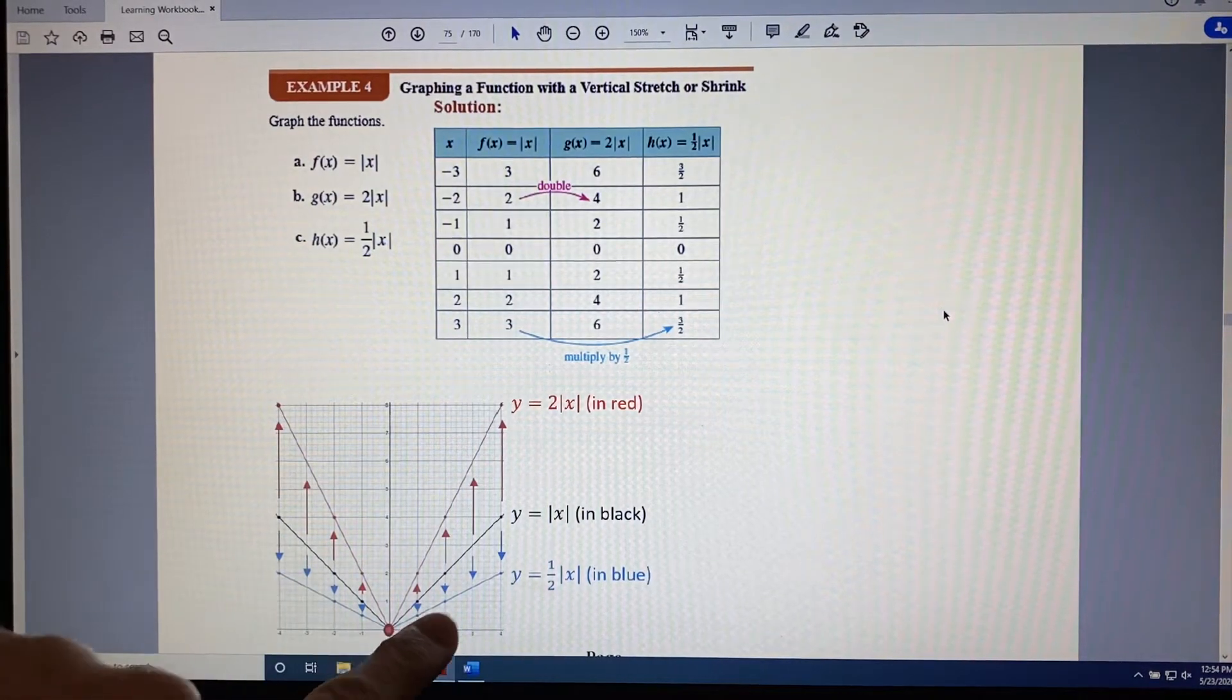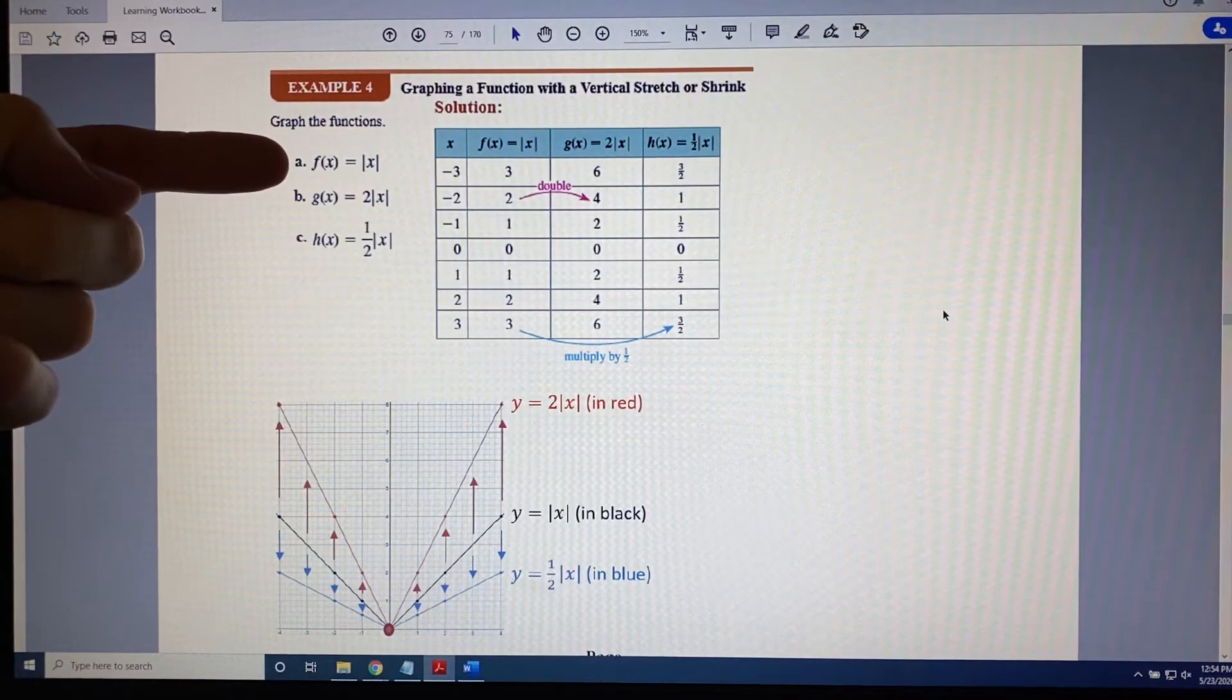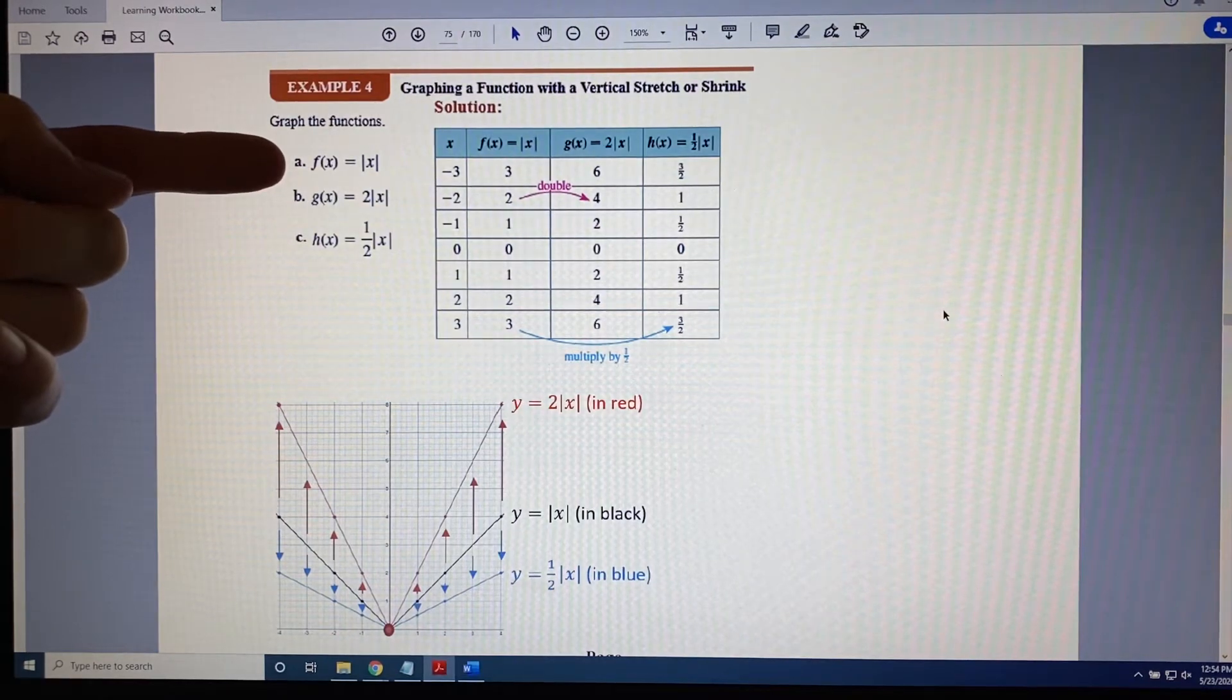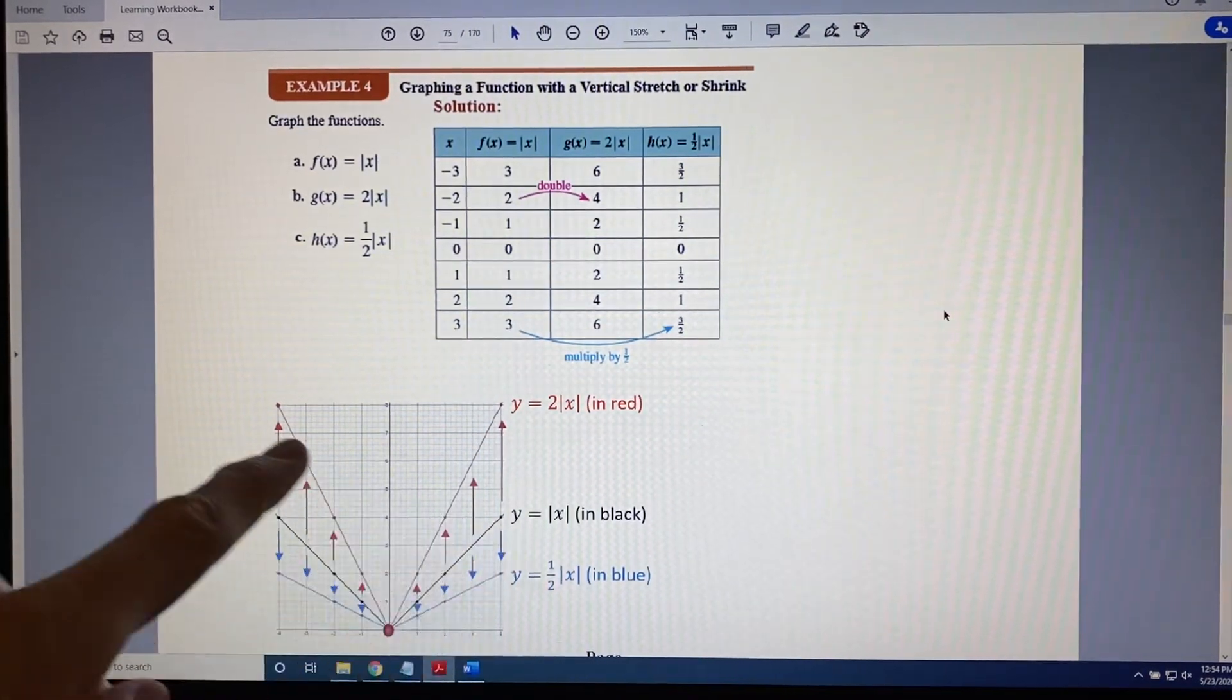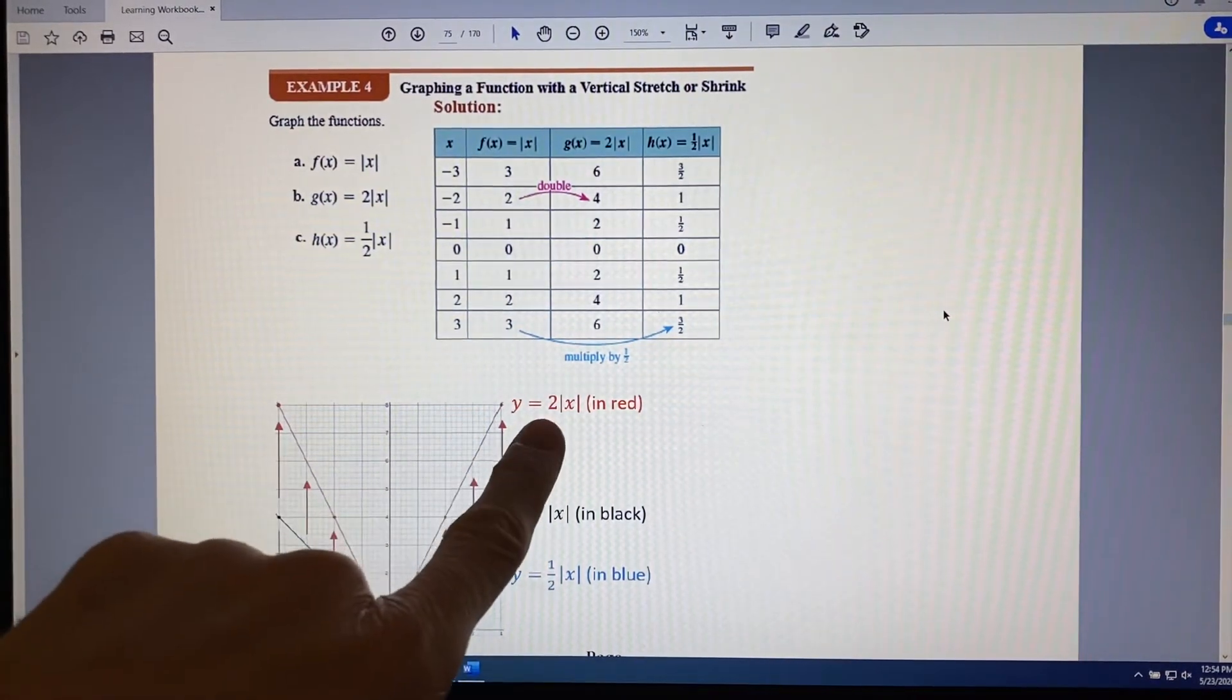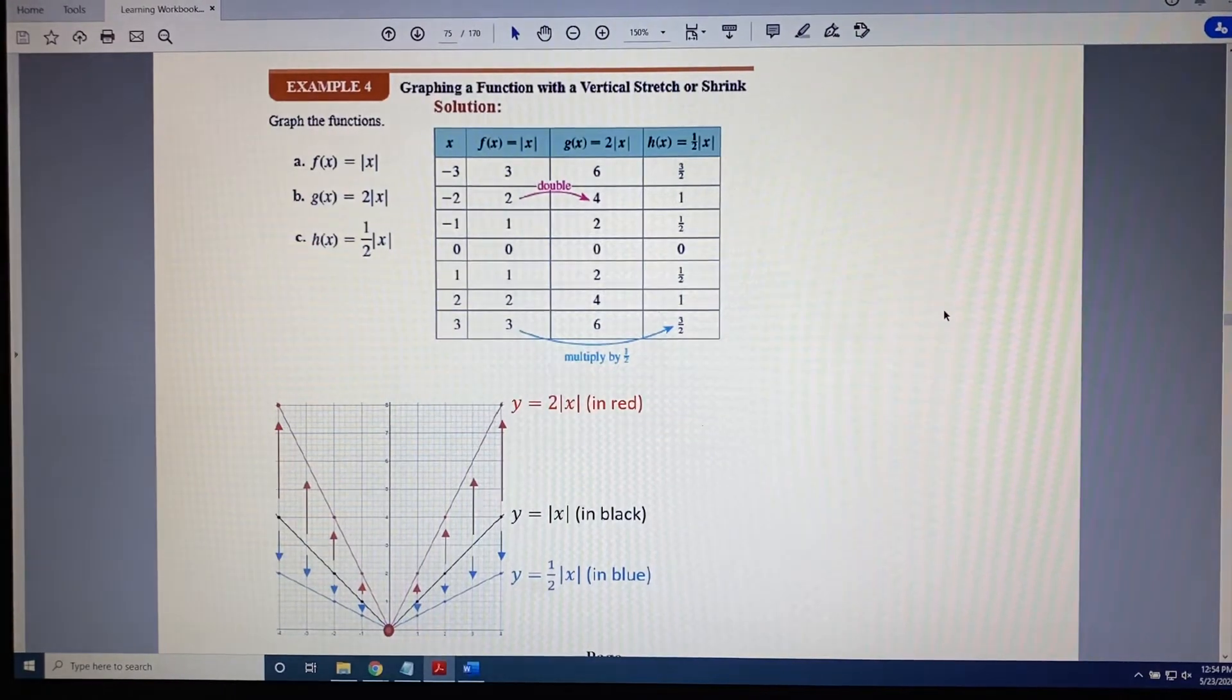The black graph shown here in the middle is our parent function or our basic function or our library function f(x) = |x|. And you can see that it has points on it such as (0,0), (1,1), (2,2), (4,4). The red function shown here is the part b function g(x) = 2|x|.